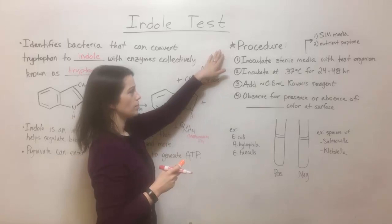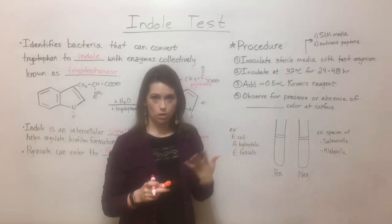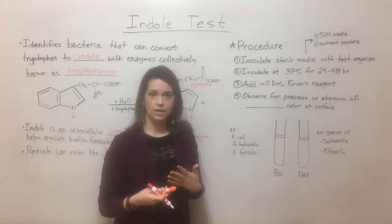So let's talk about the procedure. First of all, you have a test organism — some bacterial culture that's been cultured from a patient, for example. And in order to identify it, you want to determine if it has this ability to convert tryptophan to indole or not.